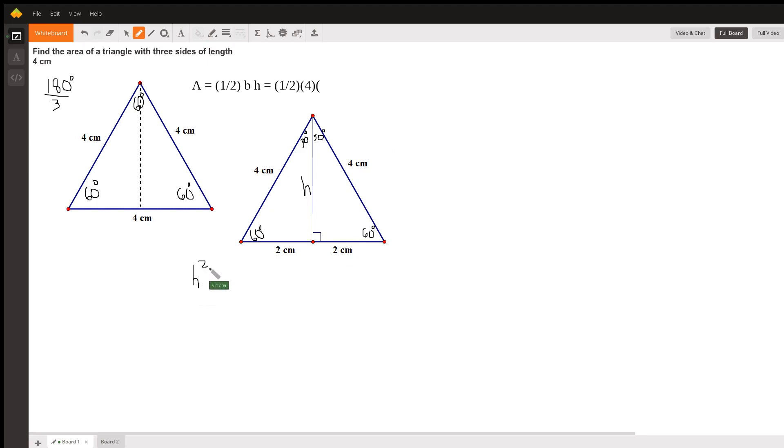So h squared plus two squared equals c squared. Notice we're only looking at this triangle right here, just the one side. So that's the triangle we're looking at to find this h that we need.